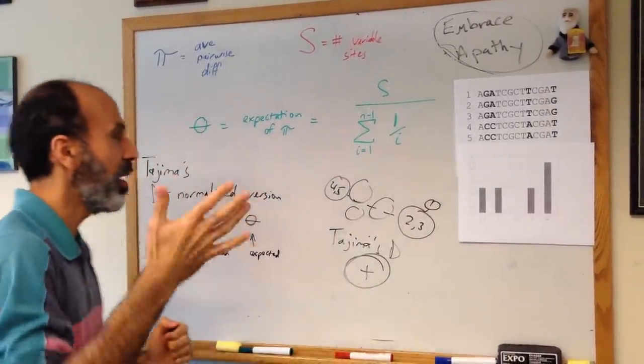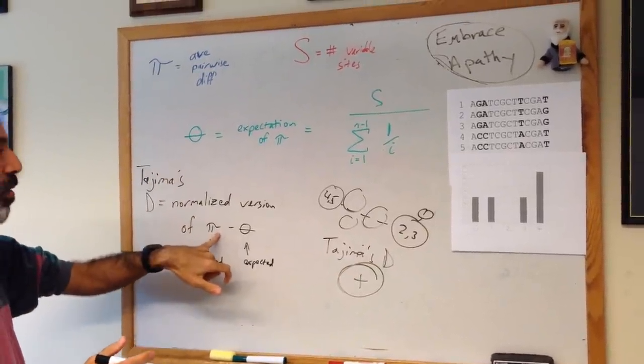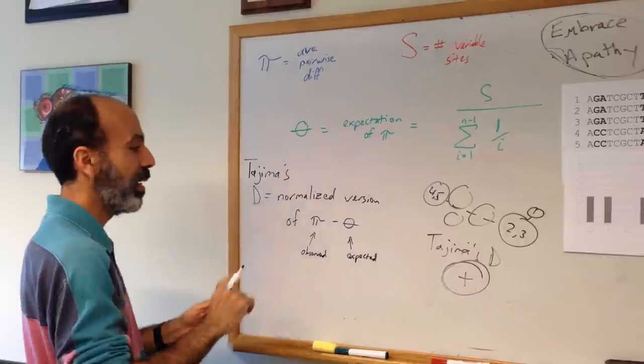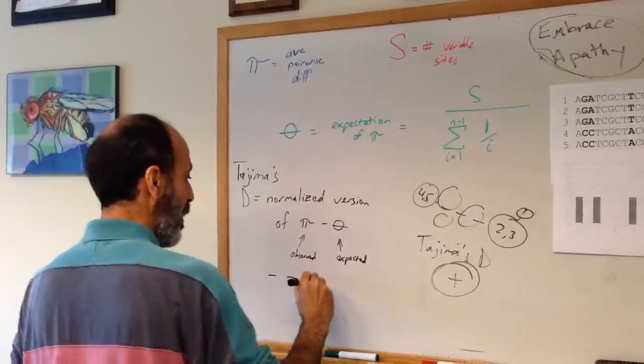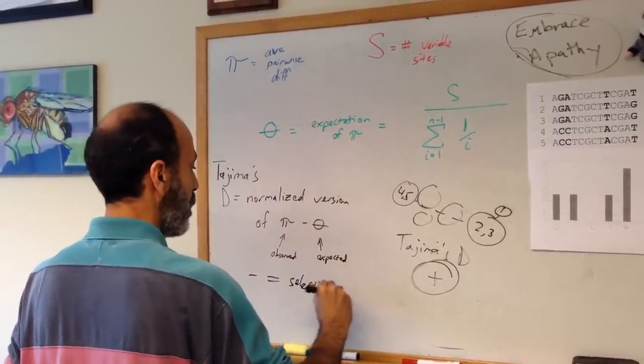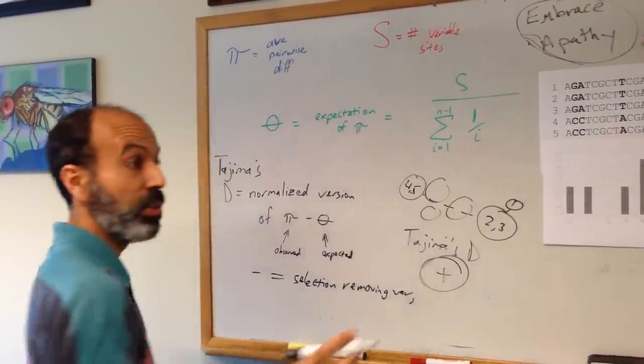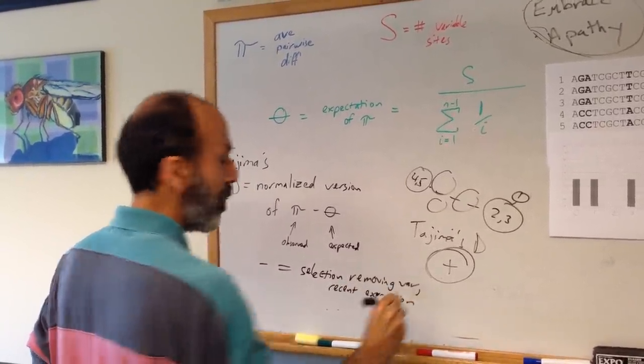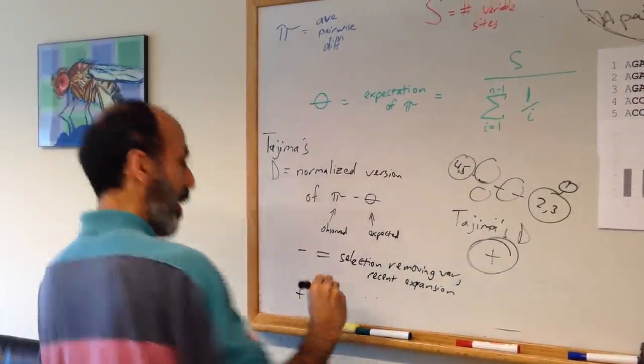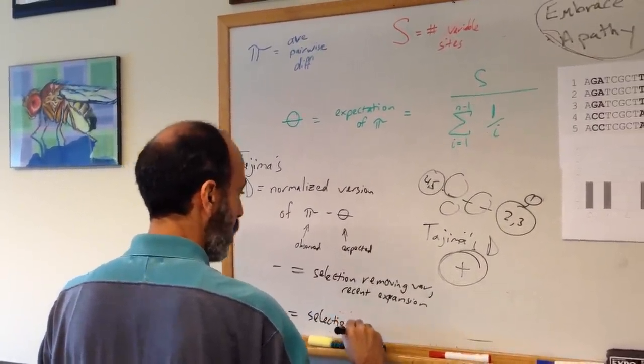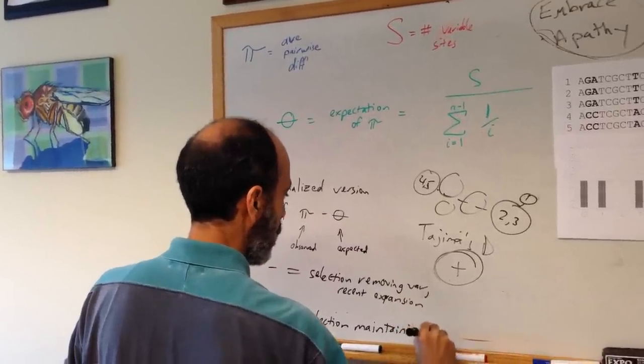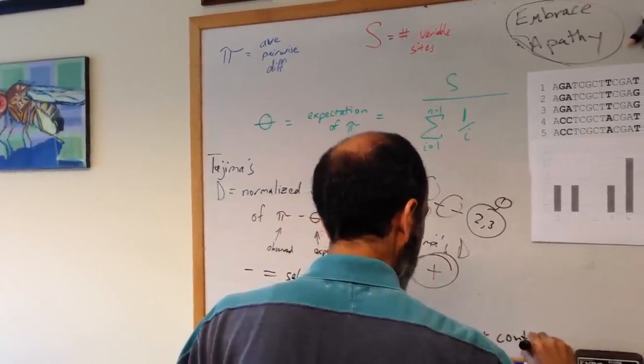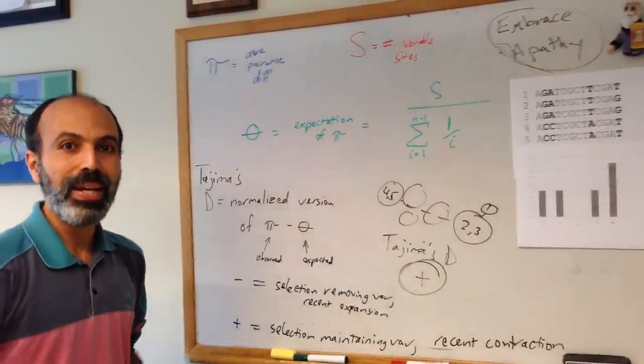I hope that's helpful in terms of giving you an idea of what's going on. Tajima's D is a normalized version of the observed amount of variation calculated as pi from that expected. The expected amount comes from knowing the number of variable sites and the number of sequences you're looking at. If Tajima's D is negative, that suggests you could have had either selection removing variation or a recent population expansion such that you don't have as much variation as the population should be able to sustain. Whereas if Tajima's D is positive, that could suggest you have selection maintaining variation or you had a recent population contraction.